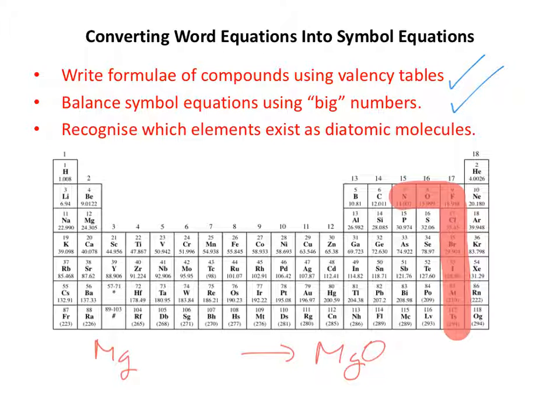For example, oxygen, when it's on its own, is O2. However, when it's with something else, when it's bonded to something else in a compound, it might be O, it might be O2, it might be O3. That depends on the valency of both the oxide and the thing it's bonded to.